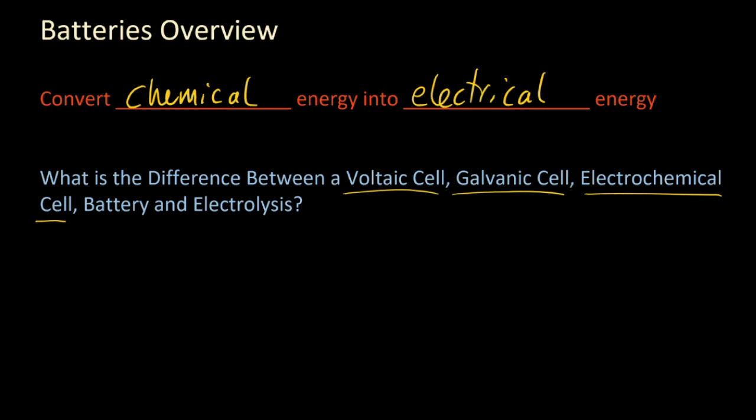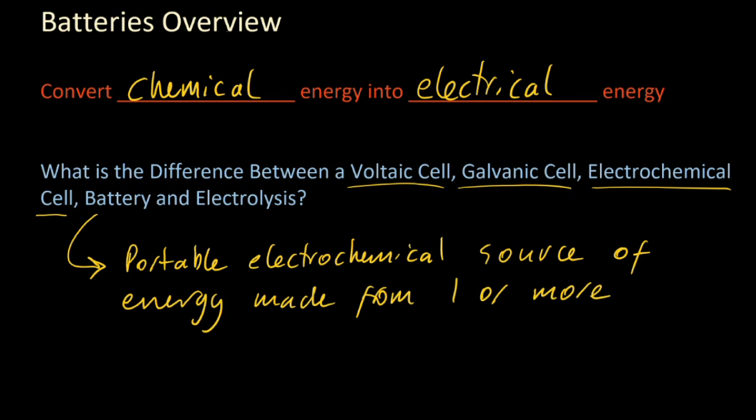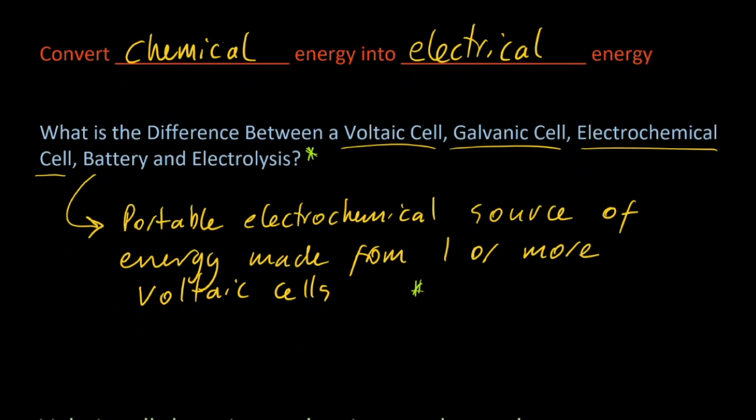The first three are the same. A battery, according to the IB, is a portable electrochemical source of energy made from one or more voltaic cells. Don't get that confused with electrolysis—that's where you're putting electrical energy in and splitting up ionic compounds. No salt bridges in that one. That uses electricity, whereas cells generate electricity.